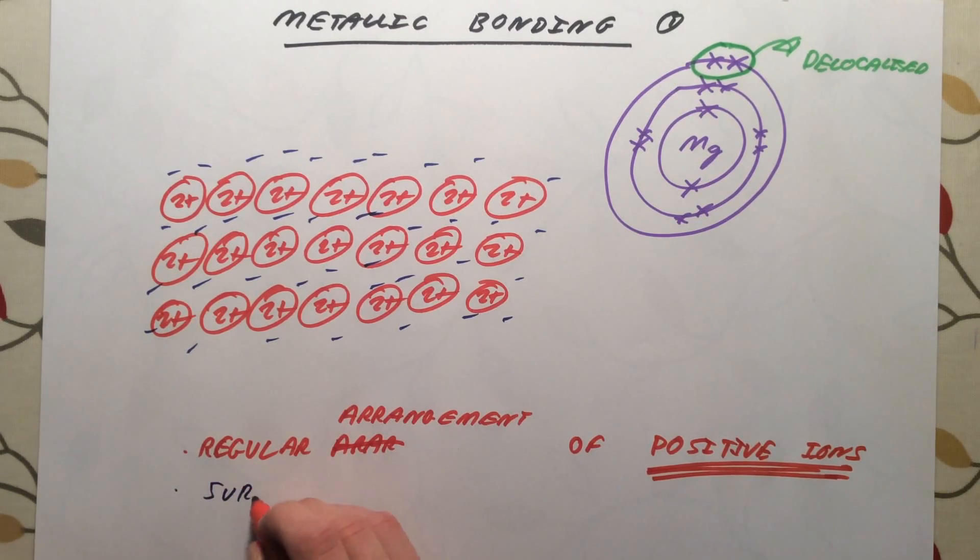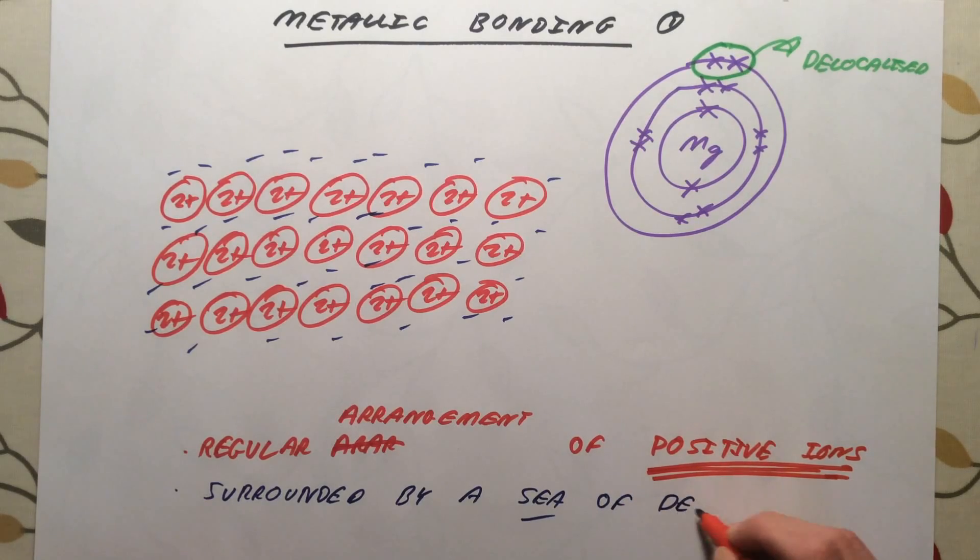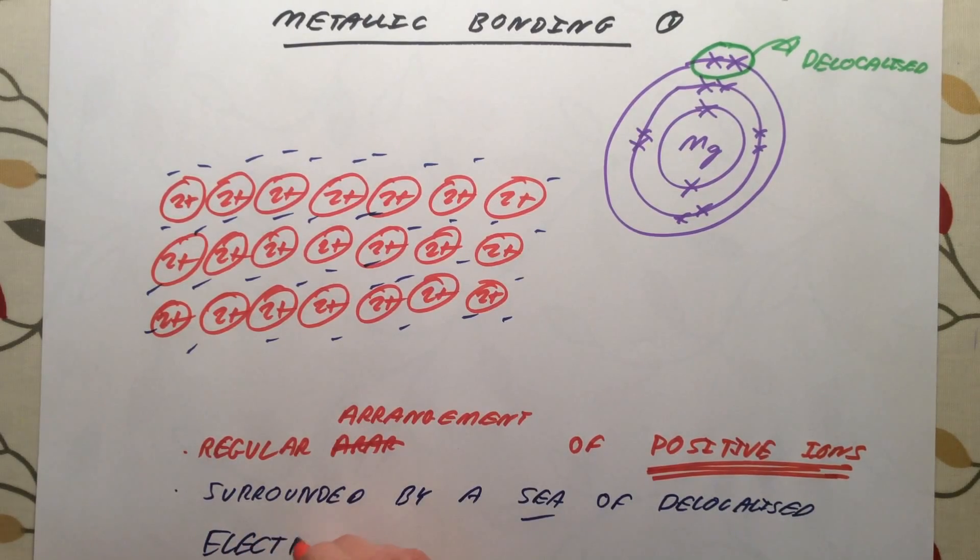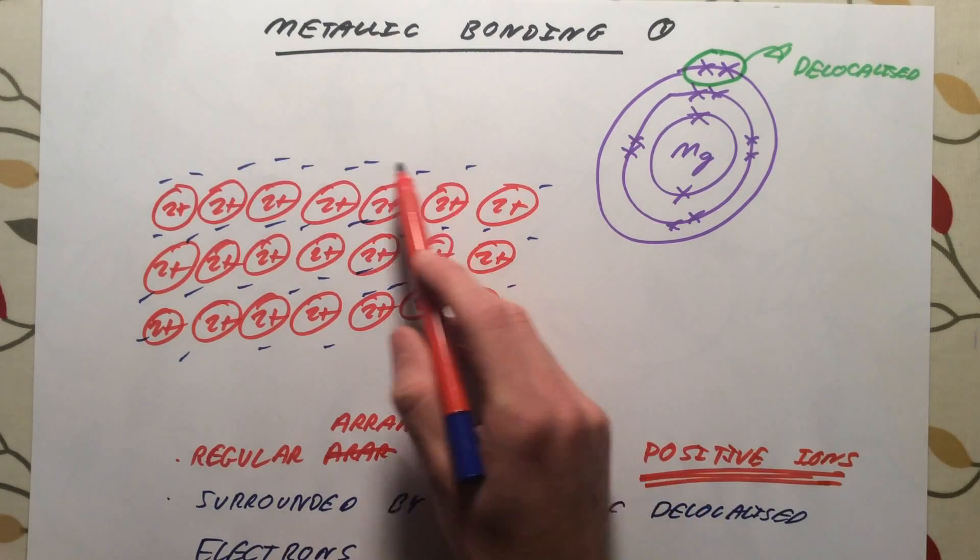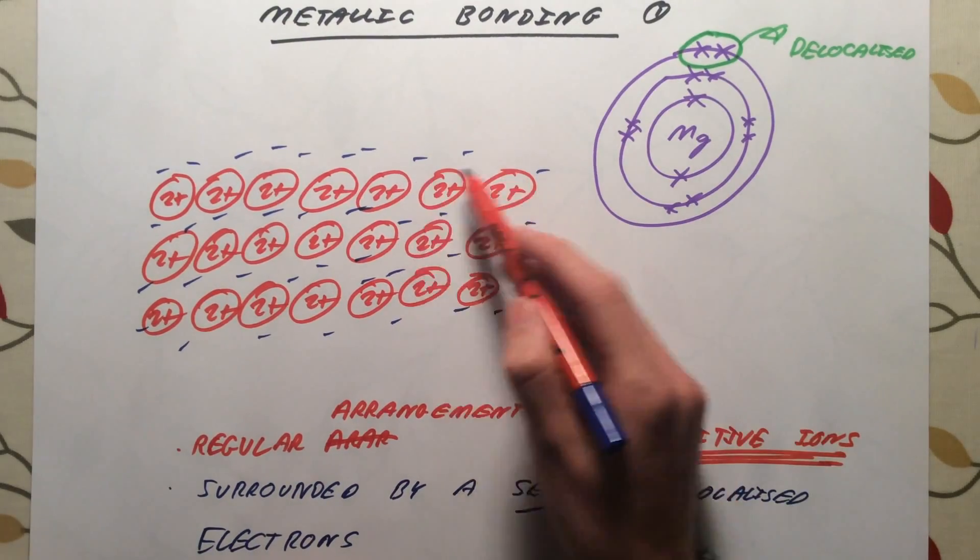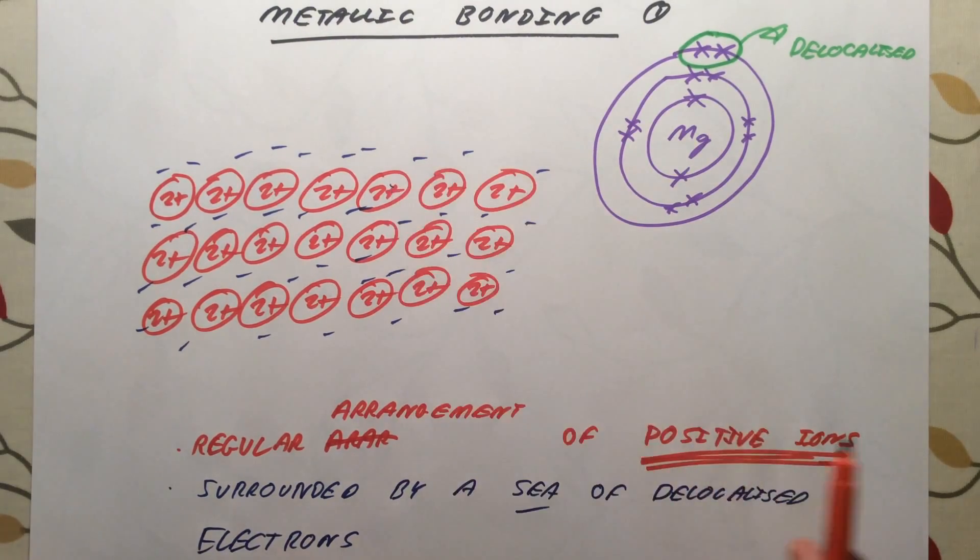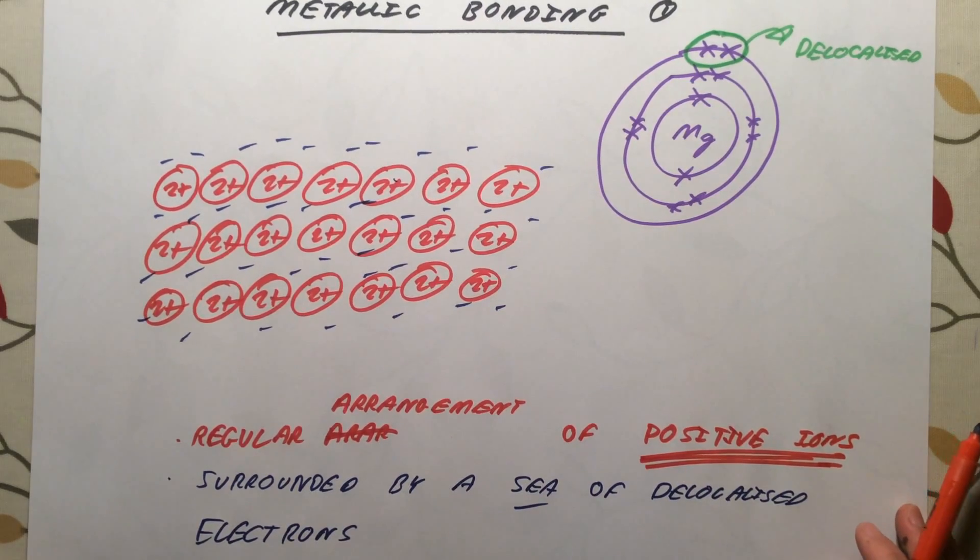They are surrounded by a sea of delocalized electrons. So these negative electrons act as a kind of glue, a kind of binding, if you like, that holds all these positive ions together and stops them from simply repelling each other. And this is the structure of your metal or metallic bonding.